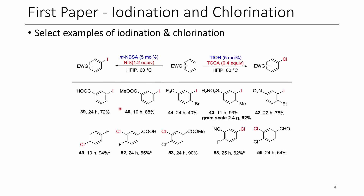In the case of iodination, this worked with carboxylic acids, esters, as well as some other electron-deficient derivatives. If you'd like to see all of them, you should look at the paper. They also show one example at a gram scale, which is noteworthy.